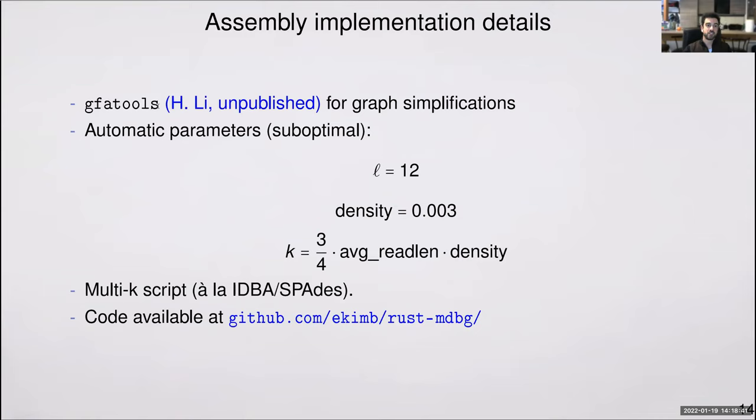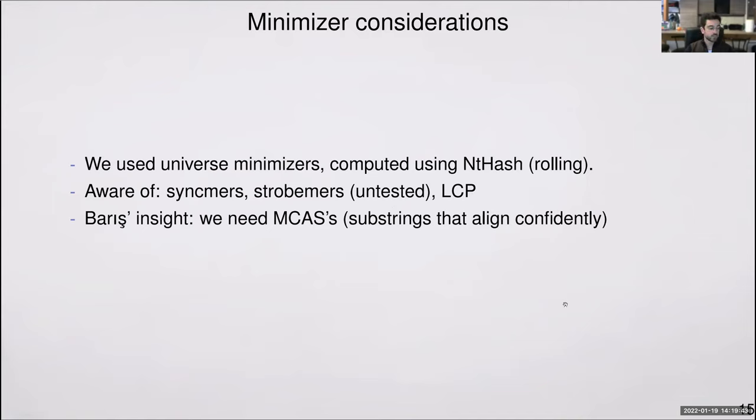I'll move on to a couple of implementation details for the hardcore bioinformatics people who are here. We perform graph simplifications using GFA tools from Hangly. We have an automatic parameter estimation that works but not the best by setting l to 12, density to an experimentally determined value of 3 times 10 to the power minus 3. K has a reasonable value such that the k-minimizers are pretty much the length of your reads, but not quite the length, a little bit less. So 3 thirds of the average read length in the density. We want long k-minimizers but not longer than reads because otherwise we couldn't construct a graph at all. If you don't trust our automatic parameter setting, we also have a multi-k script similar to SPAdes. The code is in GitHub. The state of the software is pretty much prototype++, so we don't claim to have a production-ready assembler.